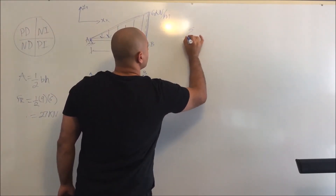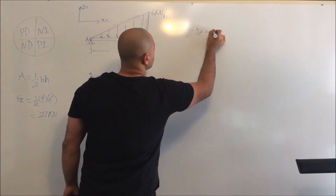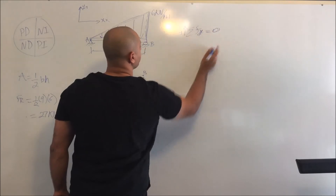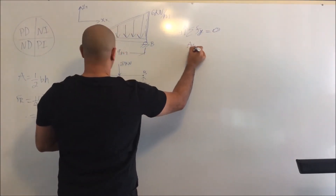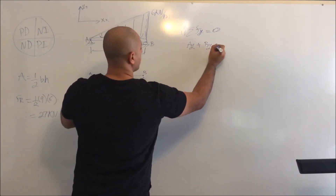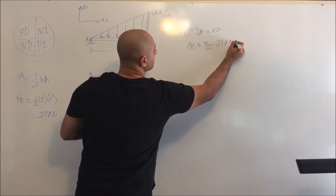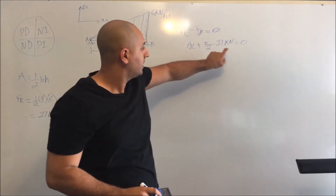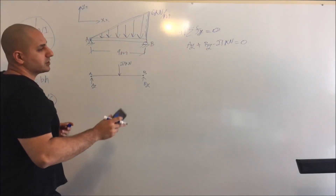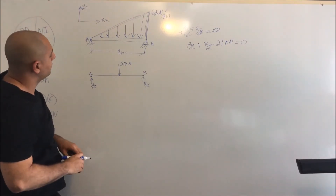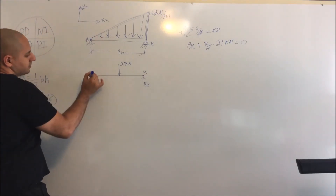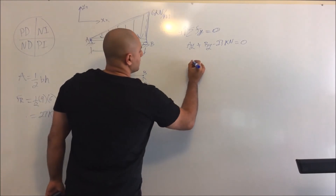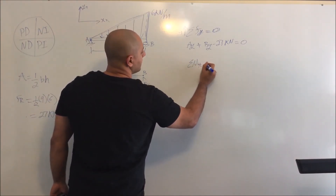Summation of forces in y equals zero — anything up is positive. We have: A_Y plus B_Y minus 27 kilonewtons equals zero. We have two unknowns and one equation, so we need another equation. We'll use a moment equation — I'll pick point A and say the summation of moments at A equals zero, since it's static.